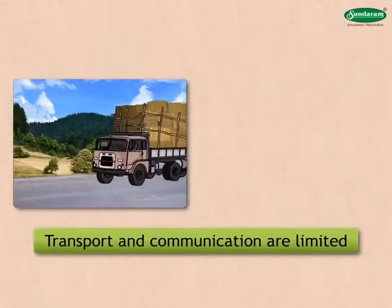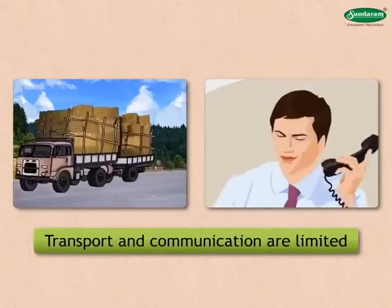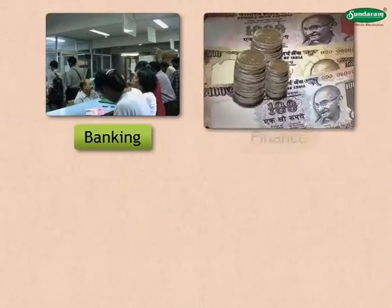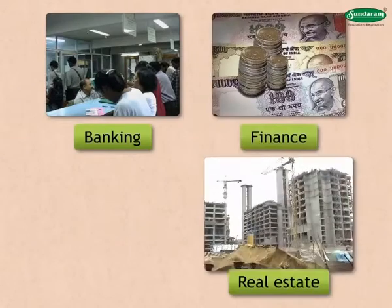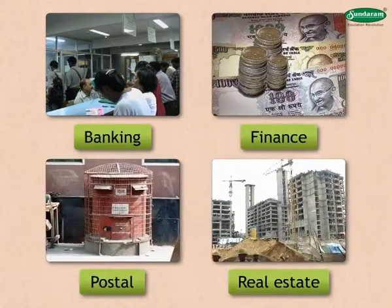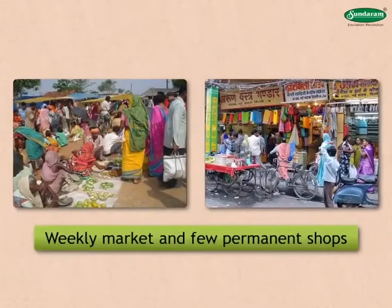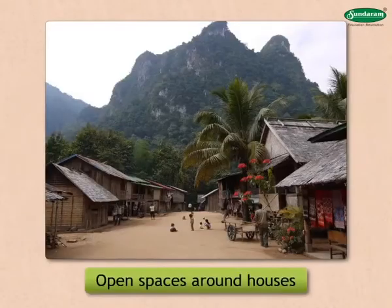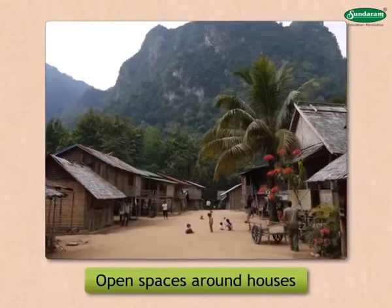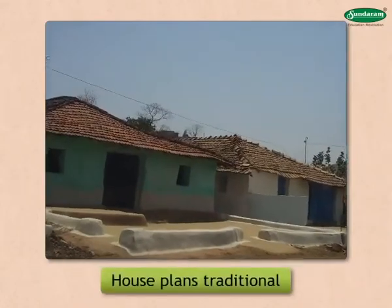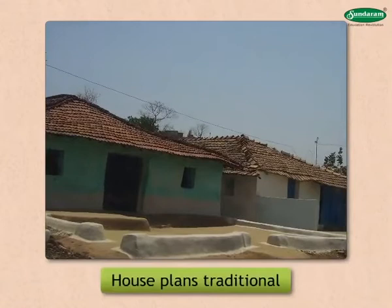Facilities of transport and communication are limited. Services like banking, finance, real estate, and postal are limited. There are weekly markets and a few permanent shops. Open spaces are available around the house, and house plans are old and traditional.